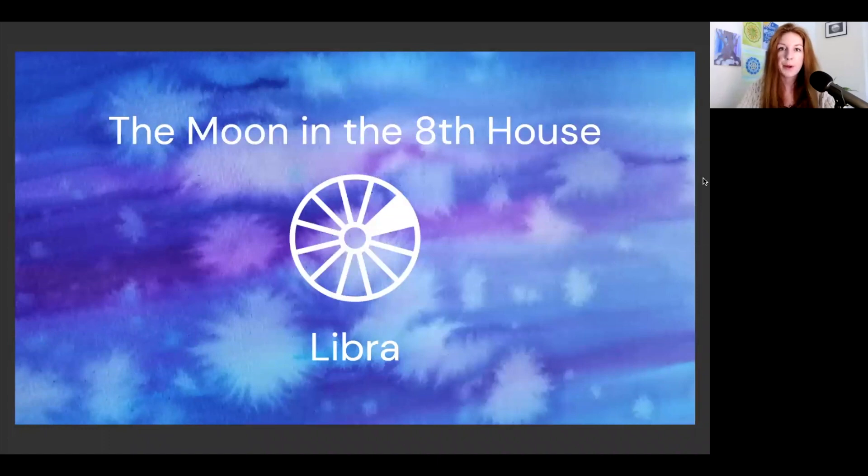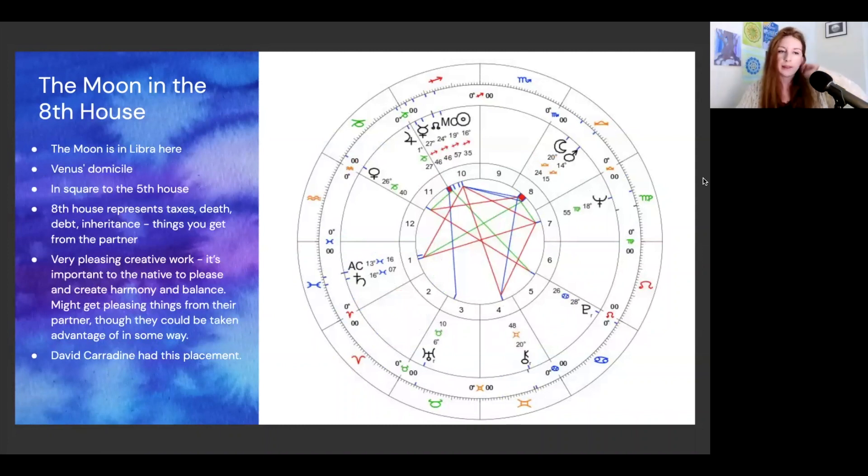Next up, we've got the moon in the eighth house in Libra. The moon here is in Venus's temple in a square to the fifth house, in a more challenging aspect. The eighth house represents taxes, death, debt, inheritance, things you get from your partner, things that are coming to you, the karmic fruit of your life.